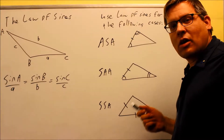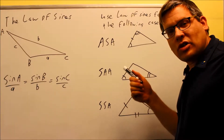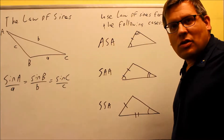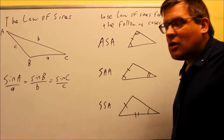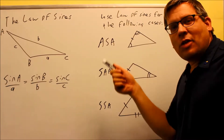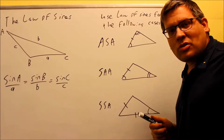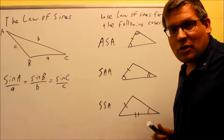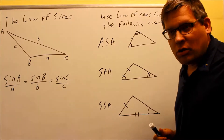In this section, we're going to talk about the Law of Sines. The Law of Sines is something that you can use to find missing sides and missing angles of triangles that are not right triangles.